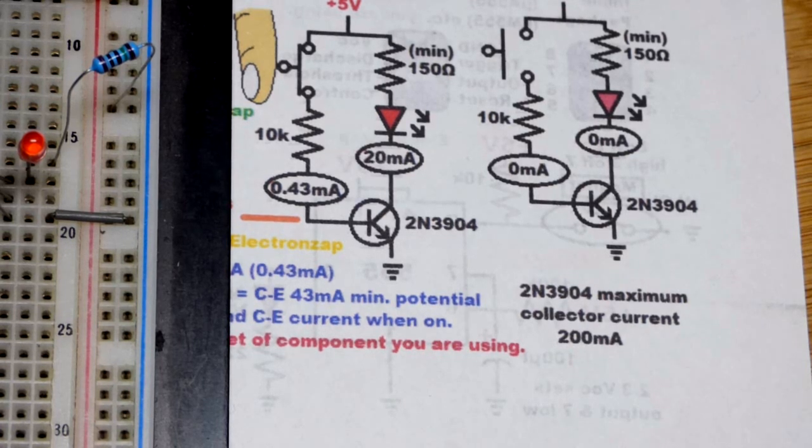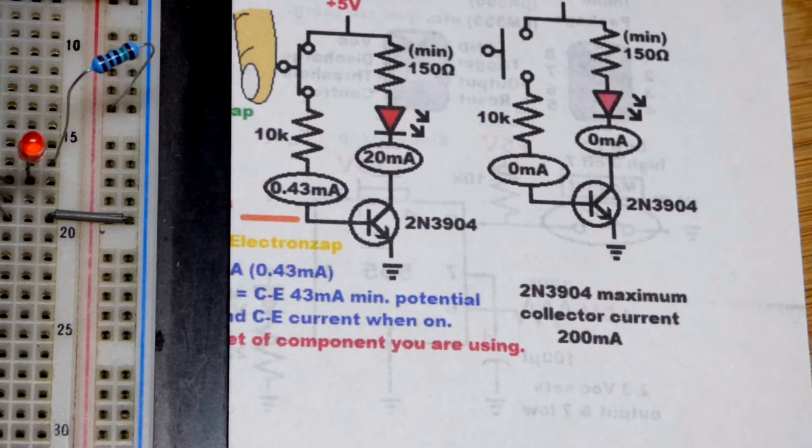That is the basics of using an NPN bipolar junction transistor as a switch. Thanks for watching.